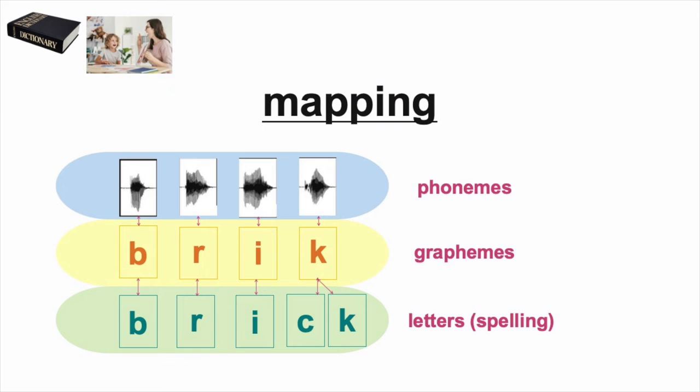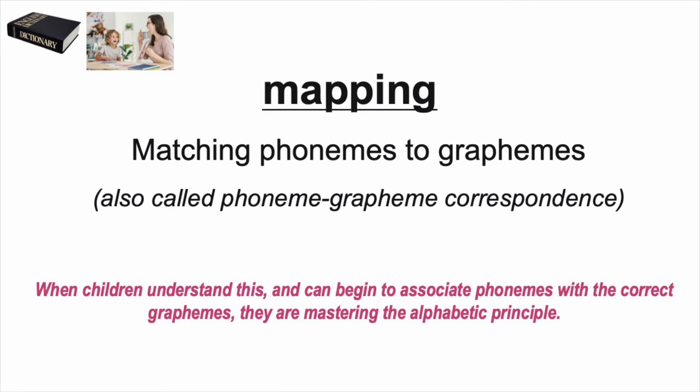Finally, in the third row, we've connected both phonemes and graphemes onto the letters that actually spell the word brick. Notice that we use the letter C in the spelling of the word brick, but phonetically, this word uses an ending consonant blend and only the K sound is pronounced. Once children understand how to do this and can begin to associate phonemes with the correct graphemes, they are mastering the alphabetic principle.